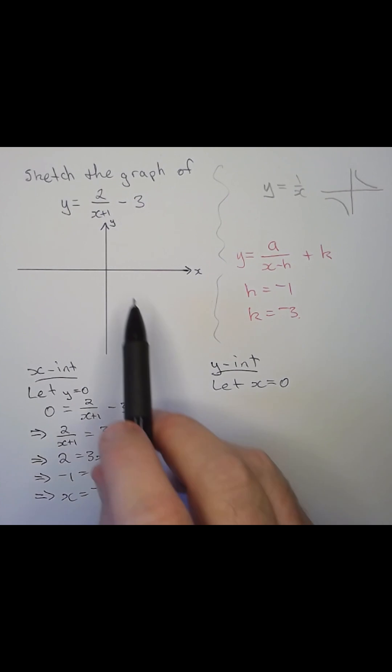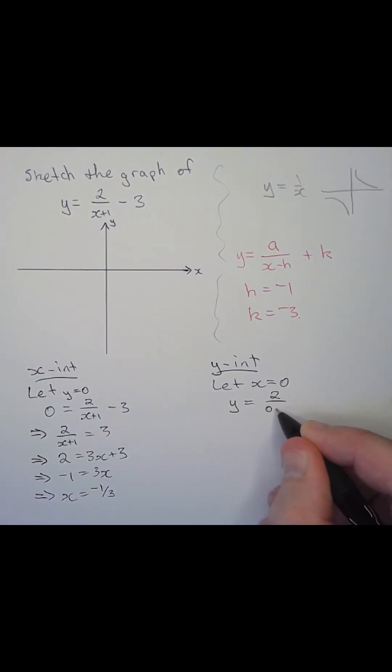For the y-intercept, when x equals 0, the function becomes y equal to 2 over 0 plus 1 minus 3. We find y equal to minus 1.